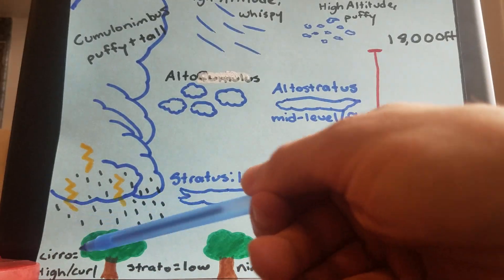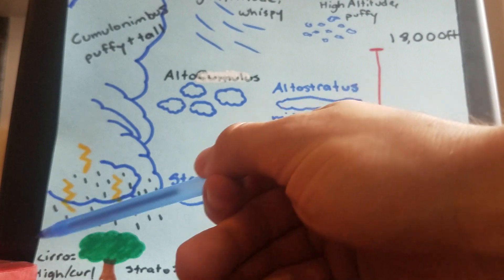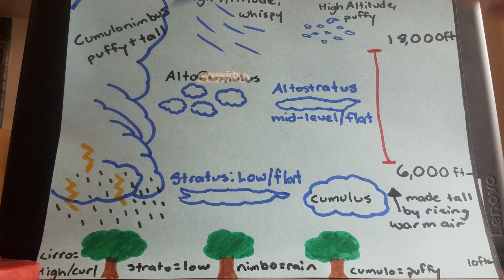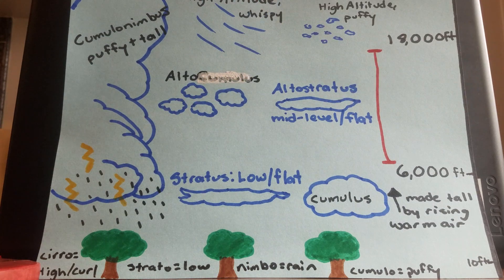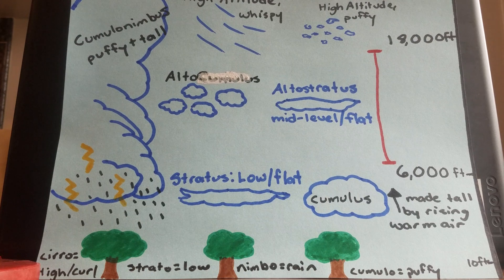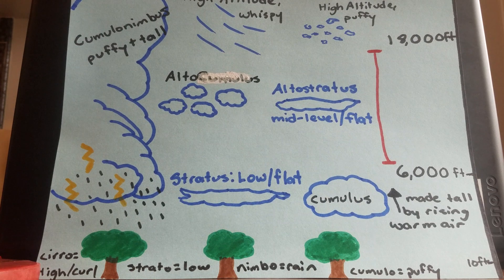So first we got cirrus. Cirrus clouds, CRS clouds. The prefix is cirrus. Cirrus clouds are always very high in the troposphere and they always have this kind of curly, wispy look to them. These are the kind of clouds that you see in the sky that kind of look like airplane trails.